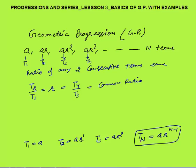So the nth term of any geometric progression is A·R^(N−1). The sum of N terms in any GP with first term A and common ratio R is always equal to A·(R^N − 1) divided by (R − 1), where R is the common ratio and A is the first term.